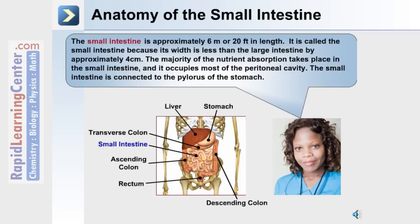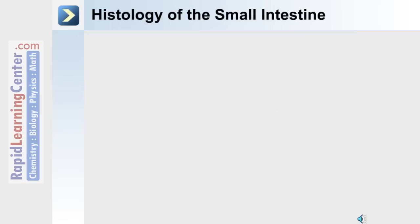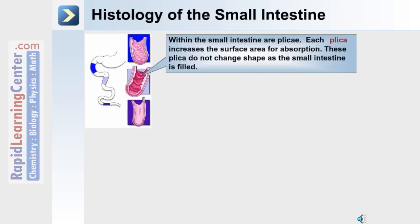Even though it's called the small intestine, it's longer but not as wide as the large intestine. The majority of nutrient absorption takes place in the small intestine, and because of its length, it occupies most of the peritoneal cavity. The small intestine is connected to the pylorus of the stomach.